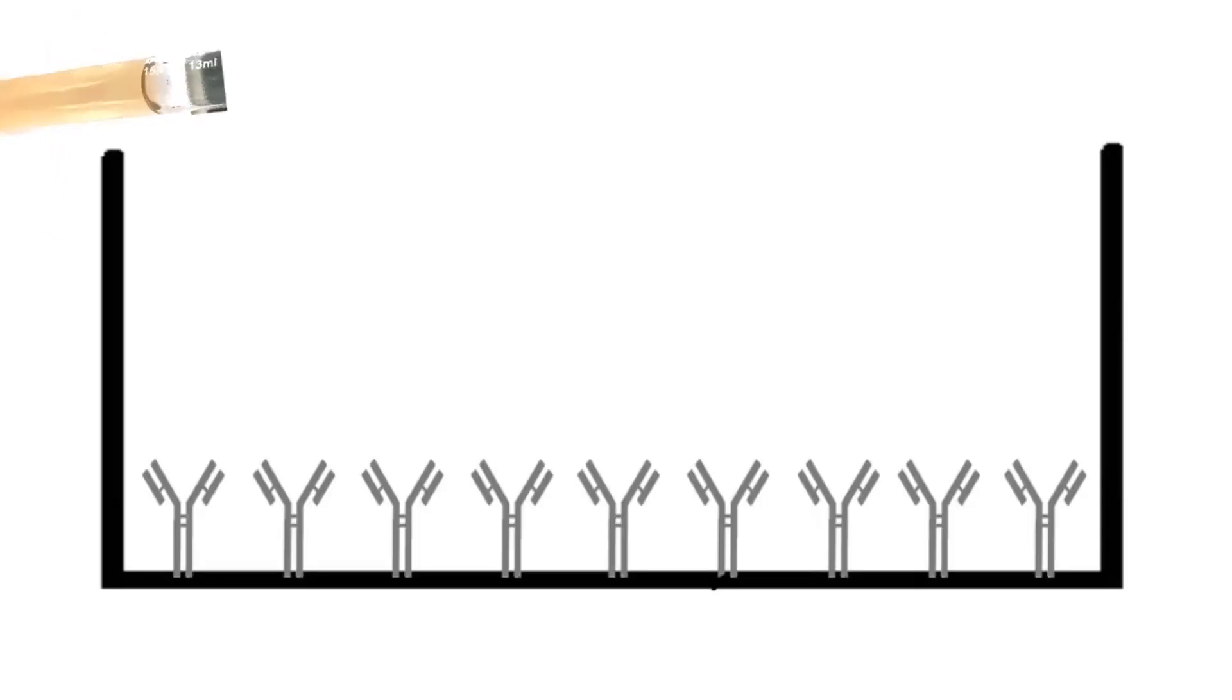After this, the sample is added to the well. If the sample contains the cells that produce interleukin 2, they will settle at the bottom at different places. In this case, we are considering two cells.